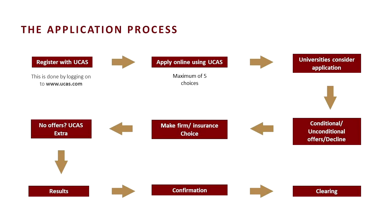You get your results typically in August, and at that point we'll be confirming you onto your courses. If you've missed the grades and entry requirements for your chosen course, there is a system called Clearing that operates at that point. It's a very competitive programme which helps place students who haven't yet got their university and course sorted with universities that have courses available. If you don't quite get the grades you need and get rejected from your firm and insurance choice, Clearing is a good place to be. Universities are there to support you through that process, and those in schools and colleges get a lot of support from advisors there.